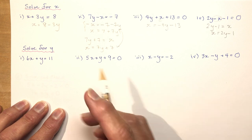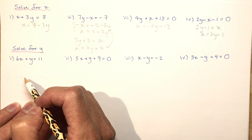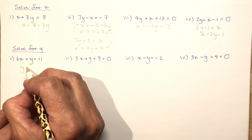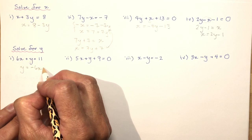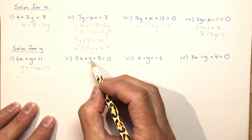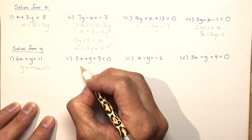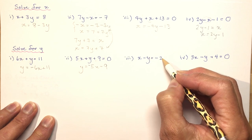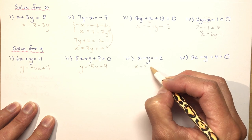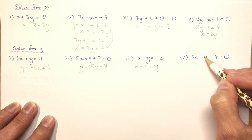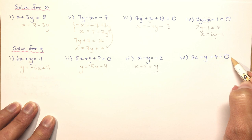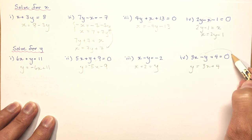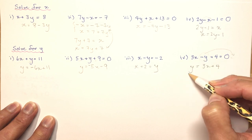It's always good to do some drill exercises first to make sure you've got a handle on solving for variables. Solving for y: y equals 11 minus 6x; y equals minus 5x minus 9; x plus 2 equals y; and for a negative y, bring it over to get y equals 3x plus 4.